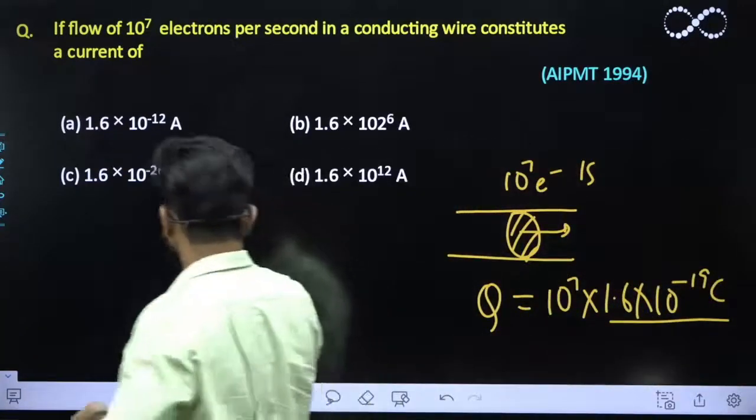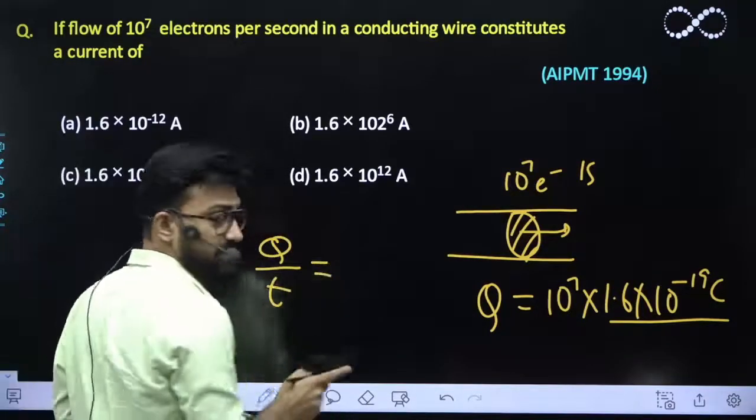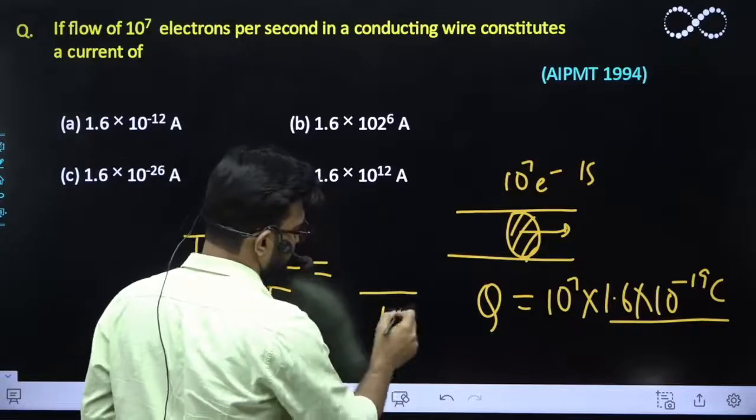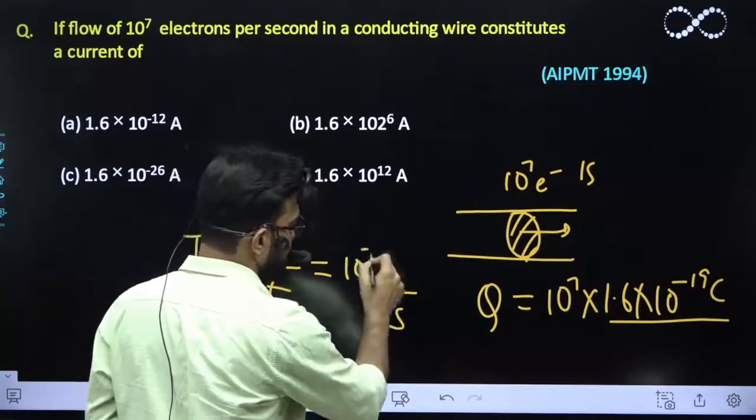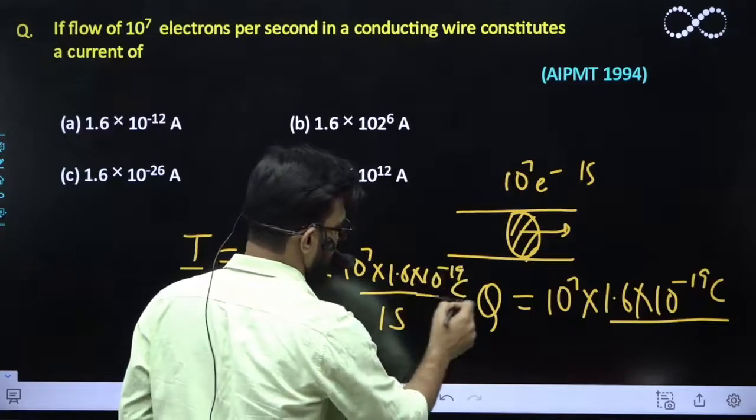So we know that current is governed by relationship I is equal to Q by T. So the current flowing in one second, it is nothing but 10 raise to power 7 into 1.6 into 10 raise to power minus 19 coulomb.